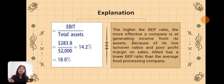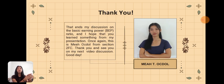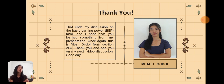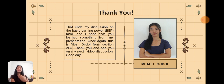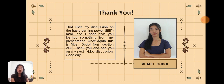Allied Food Products is not really effective at generating income or profits from its assets. That ends the discussion on the basic earning power or BEP ratio. I hope you learned something from this presentation. I am Mia Abdul from Section 2 FC — thank you for listening and watching. Good day, bye bye!